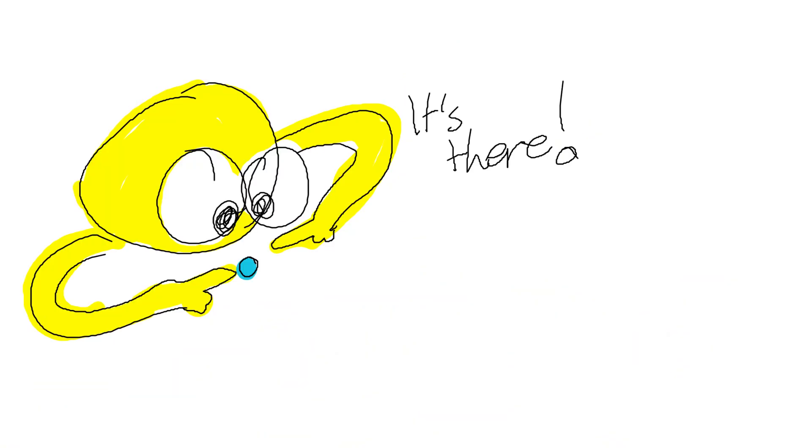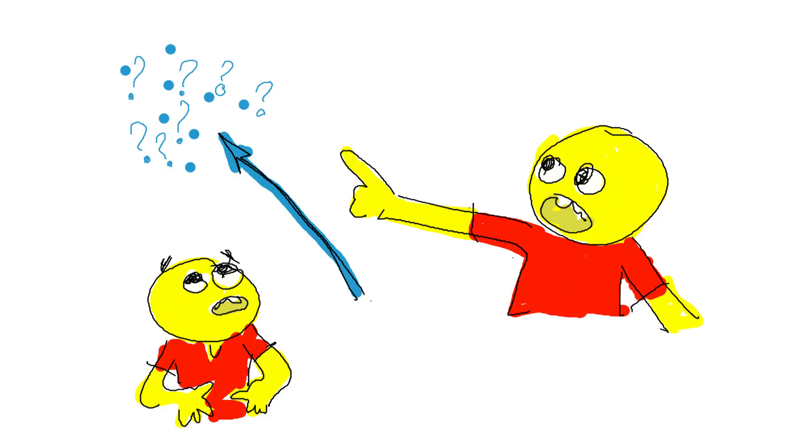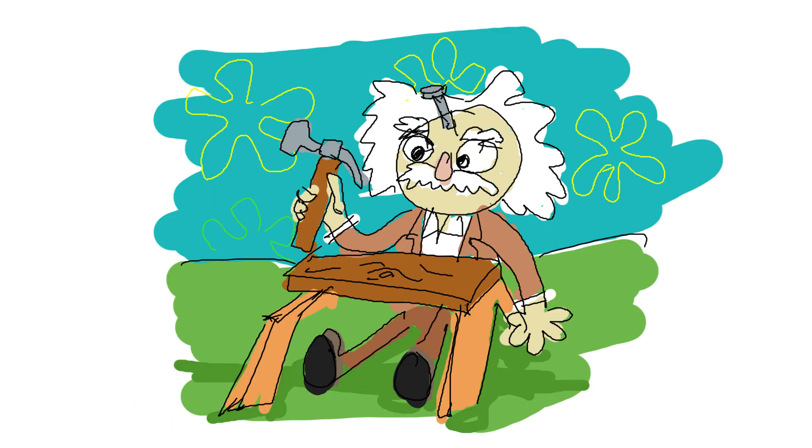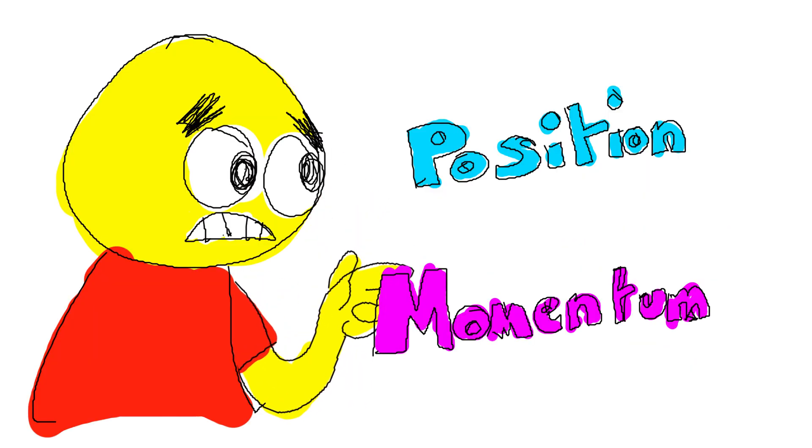So if you measure where the electron is, you disturb how it's moving. And if you measure how it's moving, you lose track of exactly where it is. That's not a flaw in our tools. It's a fundamental property of nature. You literally cannot know both perfectly.